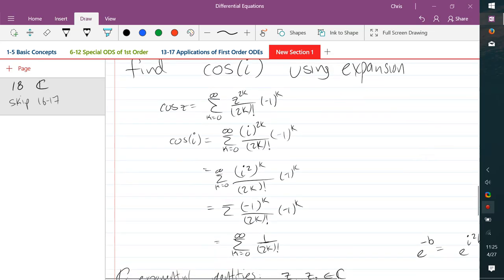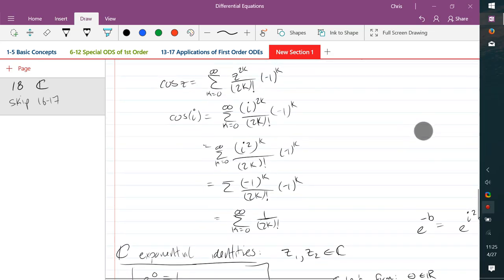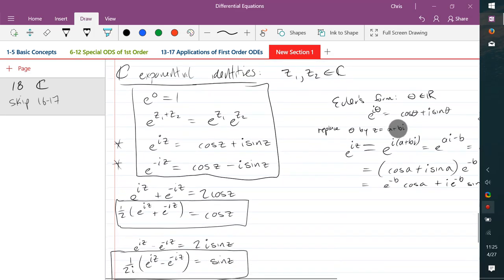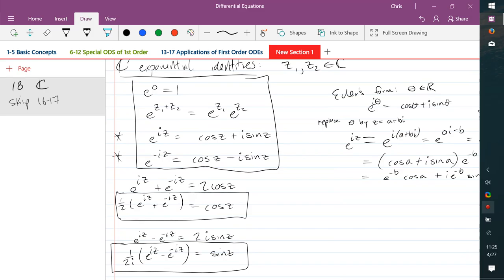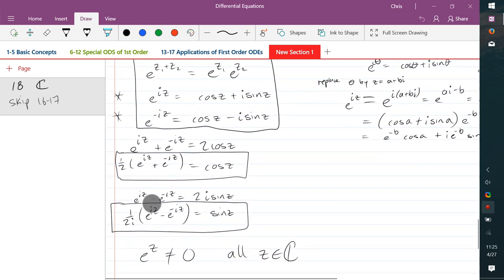So all we did was find cosine using expansion, the Taylor series expansion, simplifies down to that very nicely. And we didn't really prove any identities, but we did write them down. So here's the identities we're going to be using soon. And the last one, the fact that e to any power is never going to be zero. And our next chapter, or section 19, is linear independence of functions.